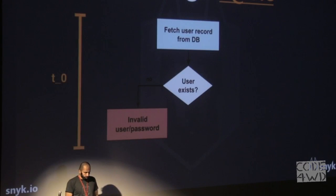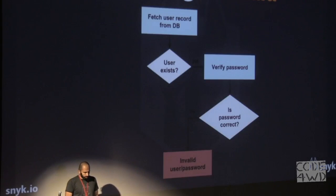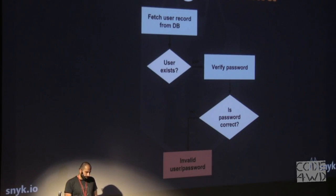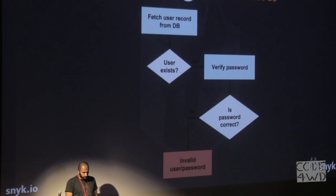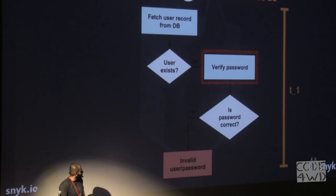If we submit the other user — Donald, the one that exists — and we measure the time it takes for this response to come back, we will take a different flow. The user exists, we fetch the record from the database, and we proceed to verify the password. As we don't know the password the login will still fail, but it will take slightly longer for the server to respond because there was extra code executed — mainly the verify password function, which has all the hashing.